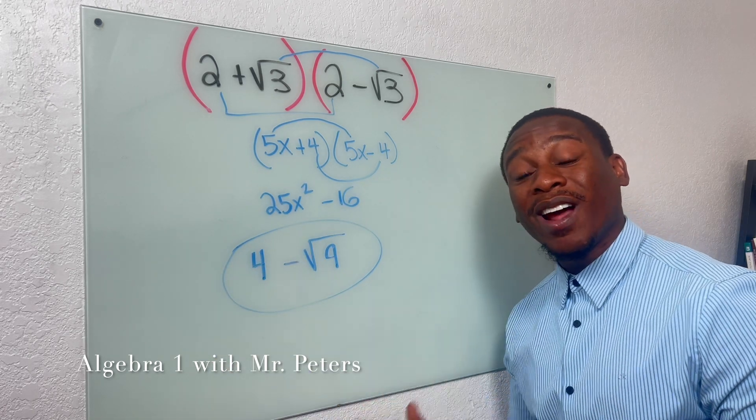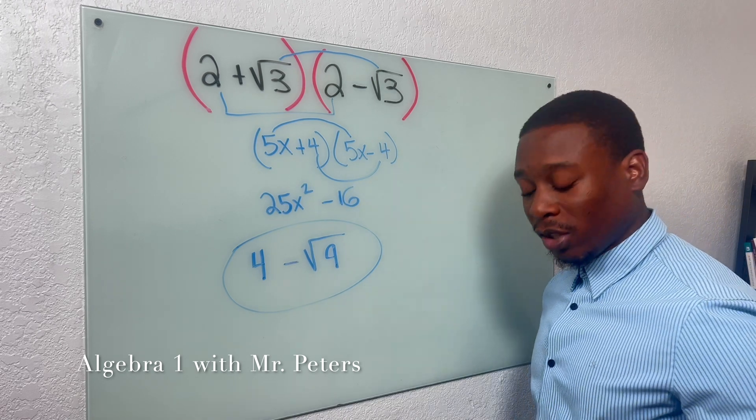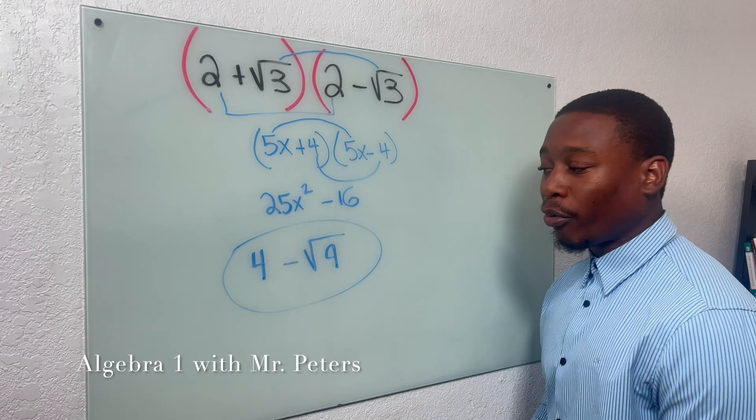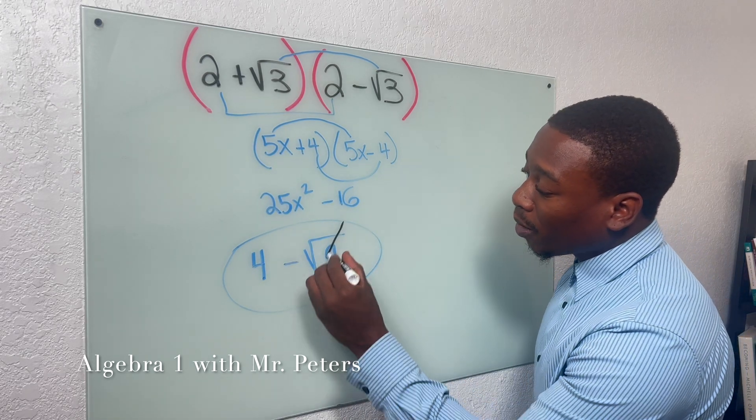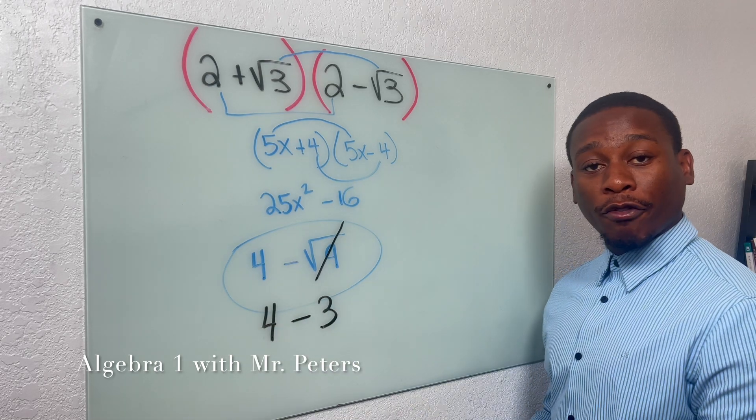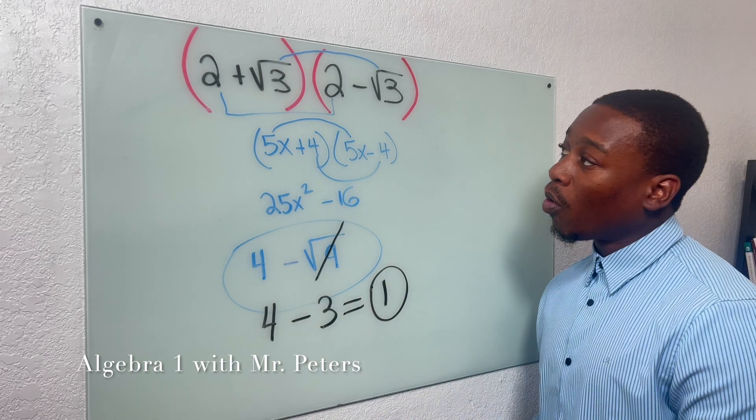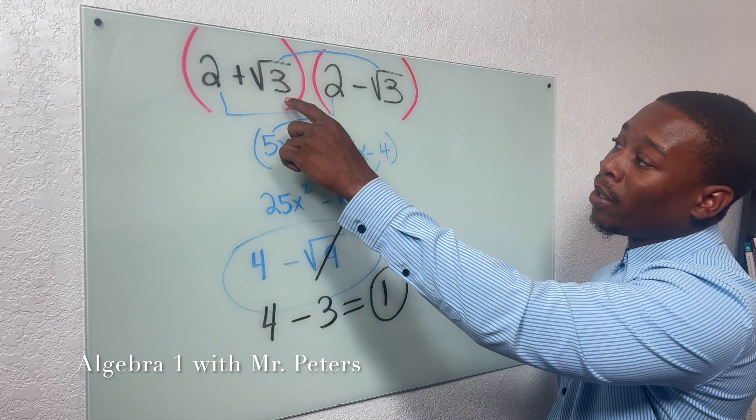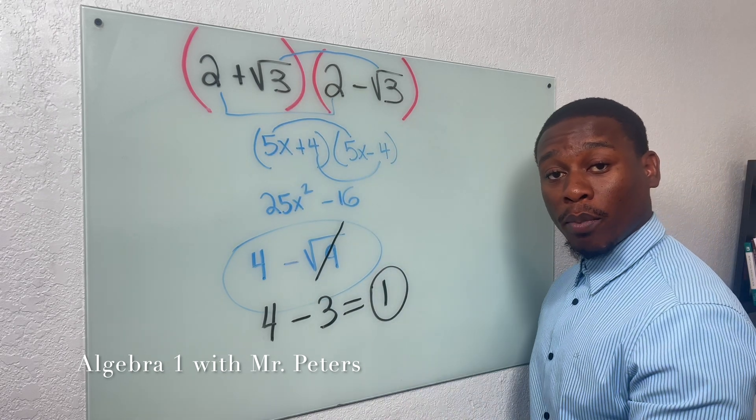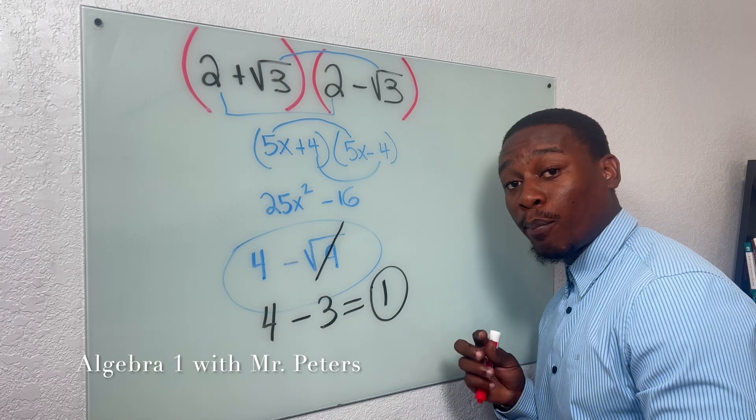So I'll multiply 2 times 2 and get 4 and then radical 3 times radical 3 to get radical 9. But we're not done with the problem yet, guys. A lot of students think we're done. But here's the issue. This is a perfect square and we could definitely break it down. So this simplifies to 3. And when we rewrite our problem, we're going to have 4 minus 3, which will give us a final answer of 1. So remember, anytime we multiply a radical with the same exact radical, radical is going to be that number without the radical. So please make sure you guys remember that important tip.